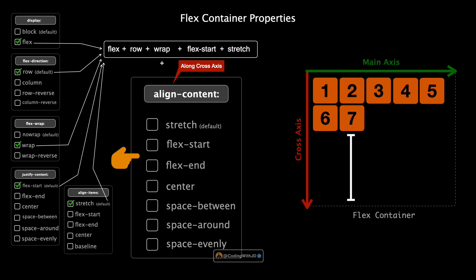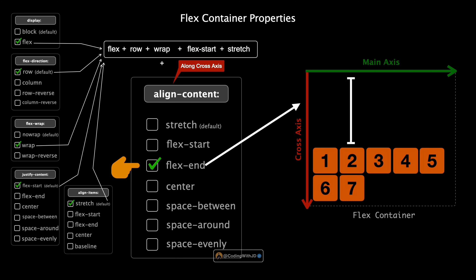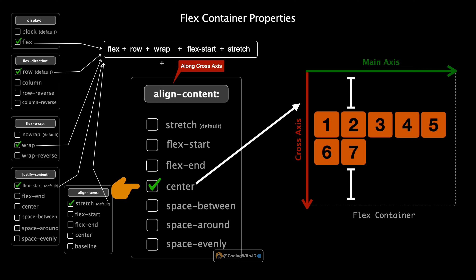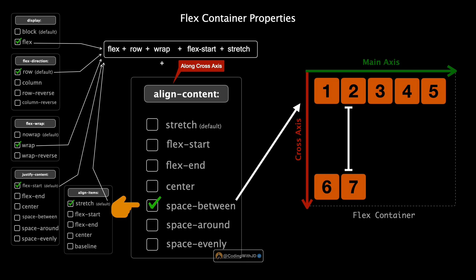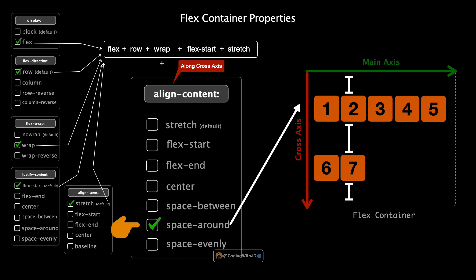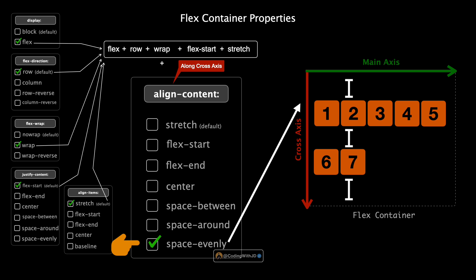Flex-start packs all lines towards the start of the cross axis — in a column layout, that means all lines are at the top. Flex-end aligns all lines towards the end of the cross axis, so on a column all lines are at the bottom. Center aligns all lines in the middle, creating an evenly centered pack within the container. Space-between spaces lines evenly with the first line at the start and the last at the end. Space-around gives space around each line — including before the first and after the last, though those are half the size of the space between lines. Space-evenly distributes all lines so the space between any two lines, as well as before the first and after the last, is exactly the same.